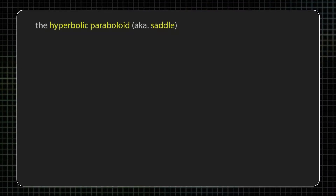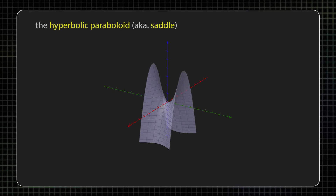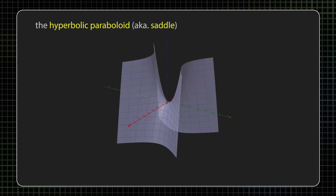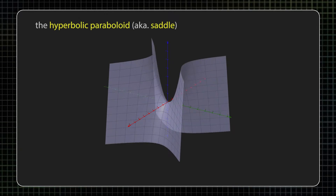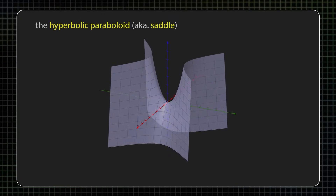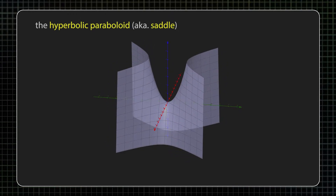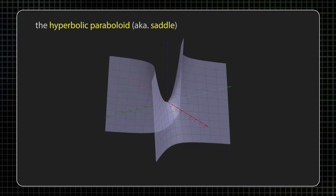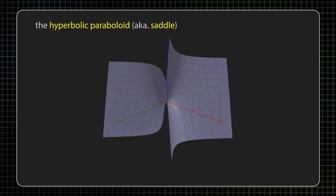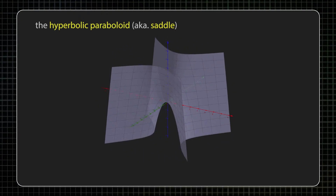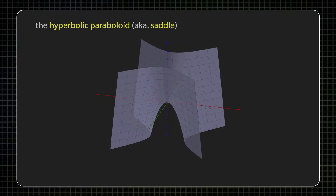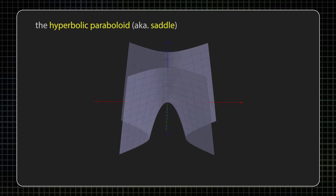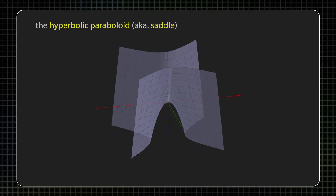What is a hyperbolic paraboloid? It's a surface, meaning it's a two-dimensional object that we typically draw in three-dimensional space, and mathematically we can represent one of these with an equation like z equals y squared minus x squared.